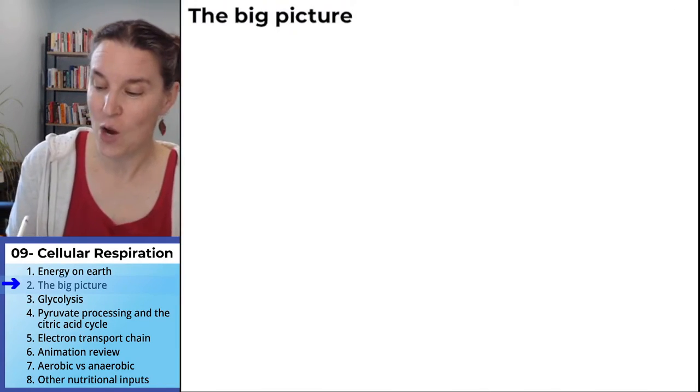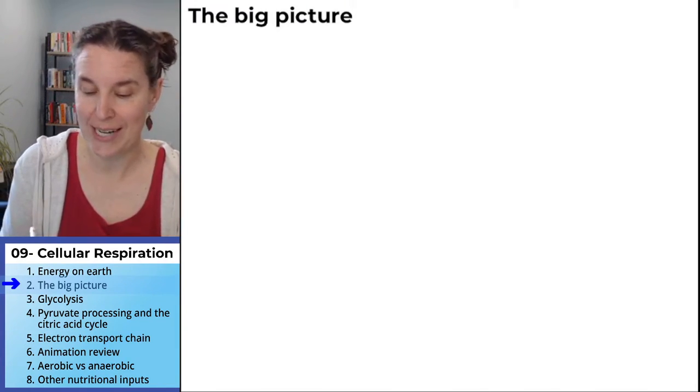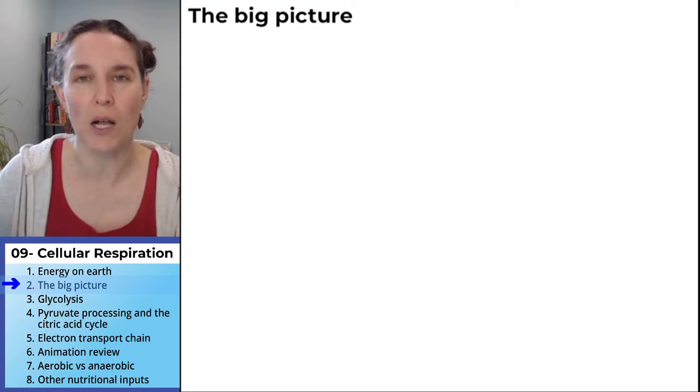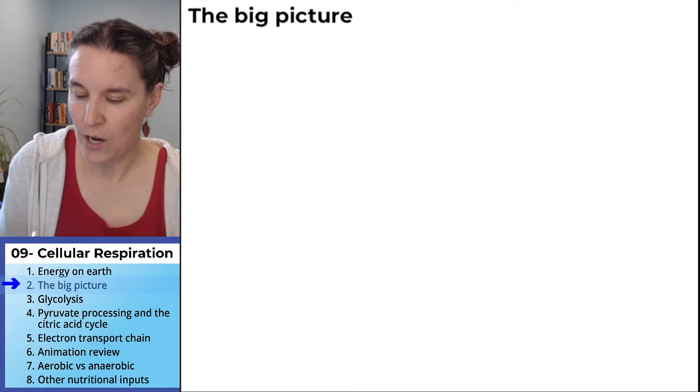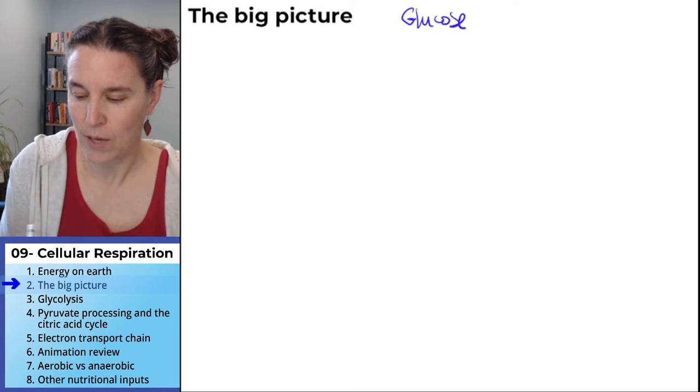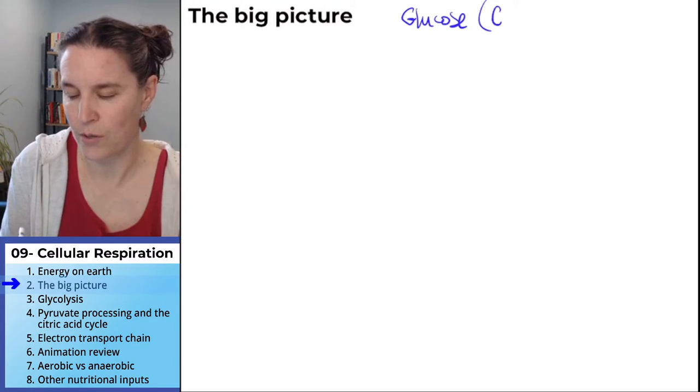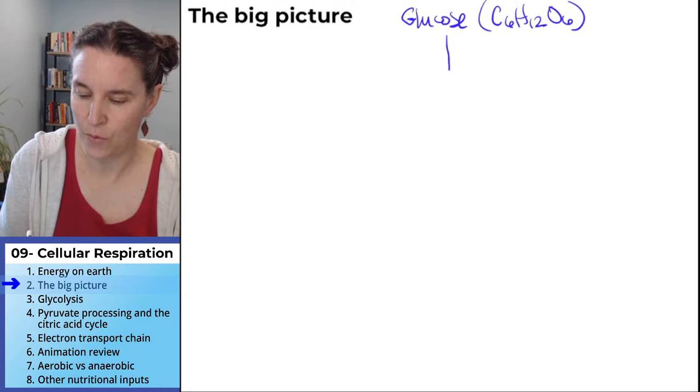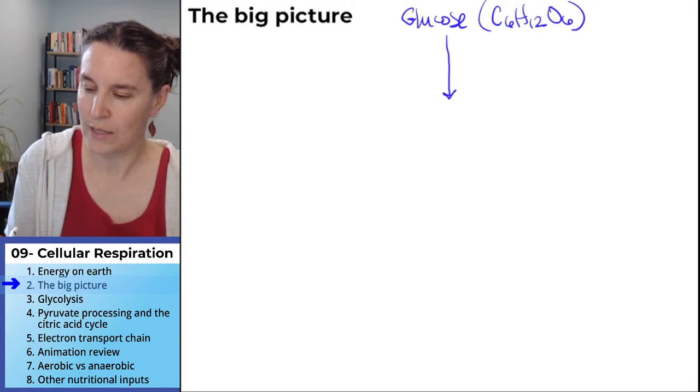For us, we're going to boil our big picture down to four stages and just a few molecules. So, we're going to start out with glucose. And glucose is going to go through a process called glycolysis. We named that already.